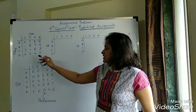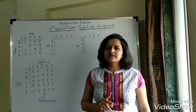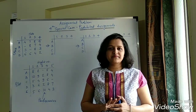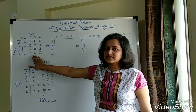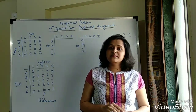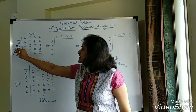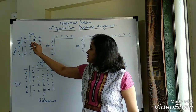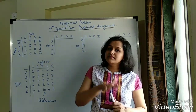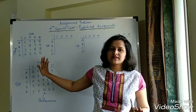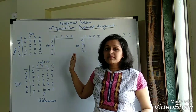We are going to solve this by using the Hungarian method. There are two basic criteria: first, a balanced matrix, and second, a minimization type of matrix. The matrix is 4 by 4, so it is balanced. These numbers indicate time, which means clerk A can perform job number 3 in 8 minutes and so on. Time is always minimized, so this is a minimization type matrix. Both criteria are fulfilled — we can directly start solving it.